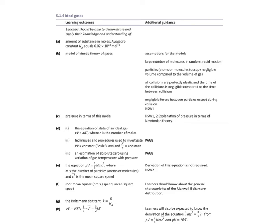Hi everyone. Today I'm going to be talking about ideal gases and how pressure, temperature and volume are related together. Just a quick reminder that last lesson we looked at the kinetic theory of gases — we talked about all the assumptions, please make sure you're familiar with them, they're very important. We also talked about how to explain pressure in terms of Newton's laws of motion, and we looked at substance in terms of moles and number of molecules.